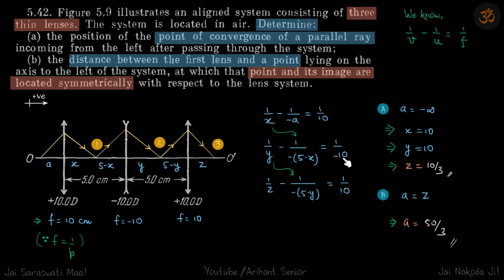So 1 by y is plus 1 by 10 so y is 10. Now we put the value of y is equal to 10 here and then you will find the value of z to be 10 by 3. So that is our first part when the ray is parallel. Parallel ray means a is minus infinity.